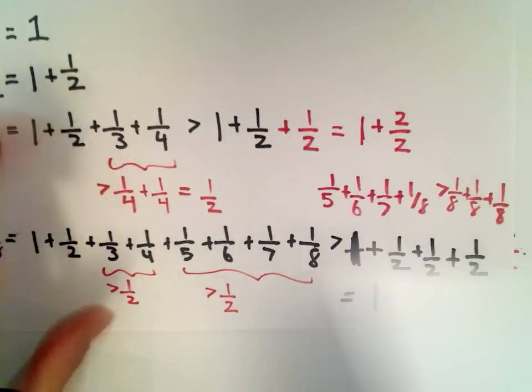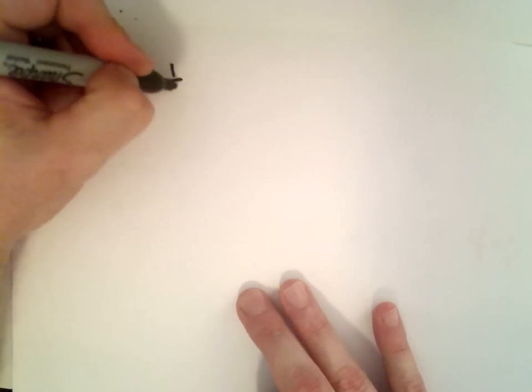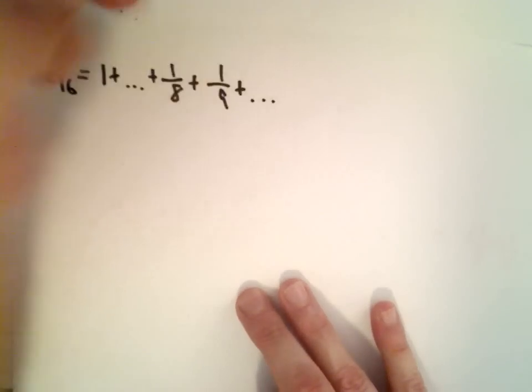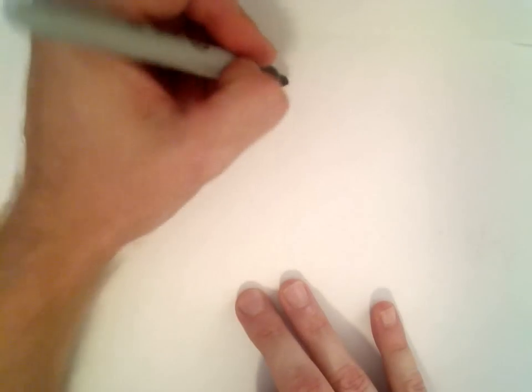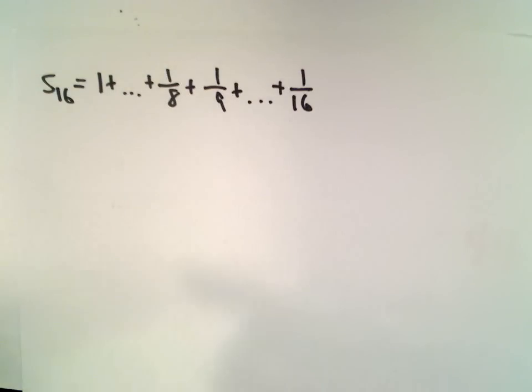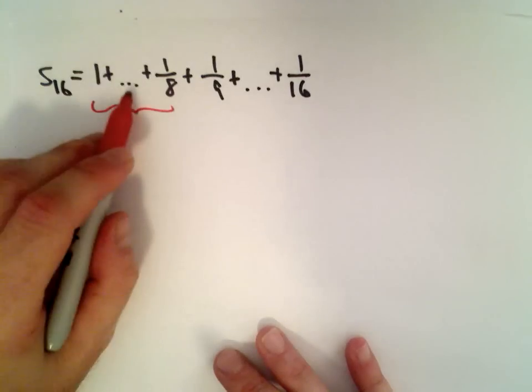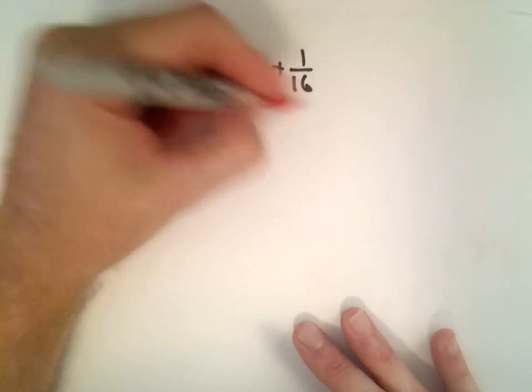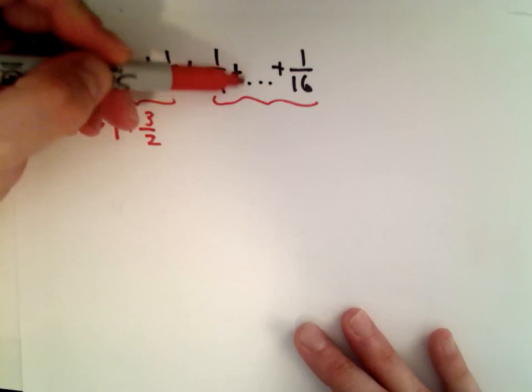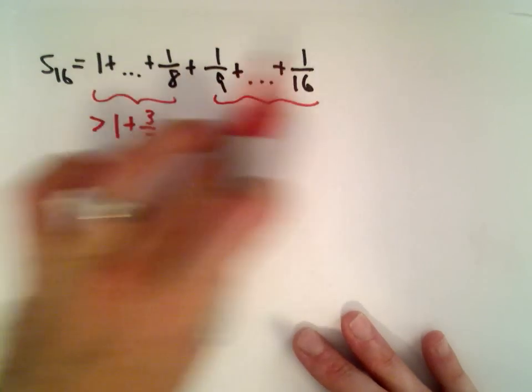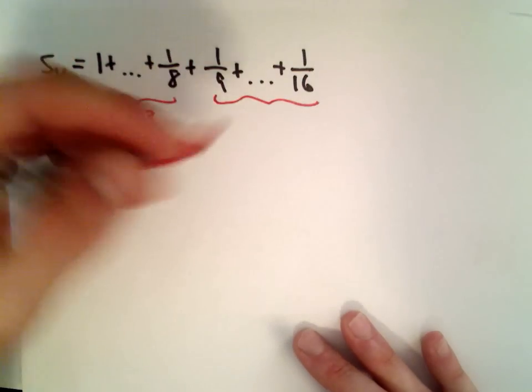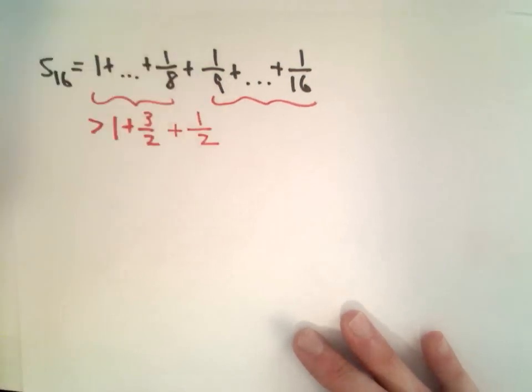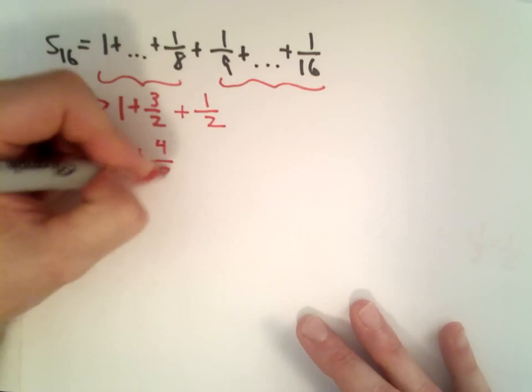Let's look at S sub 16, the first 16 terms. That's 1 plus 1 half plus 1 third plus 1 fourth plus 1 fifth, 6th, 7th, up to 1 eighth, and then plus 1 ninth plus 1 tenth, 11th, 12th, 13th, 14th, 15th, up to 1 over 16. We already said 1 plus up to 1 over 8 was larger than 1 plus 3 over 2. You can make the exact same argument now. 1 over 9 is larger than 1 over 16, so is 1 over 10, so is 1 over 11, and so on. If I add up these 8 terms, that's going to be larger than 1 half. So I can add on another 1 half, and that's going to give us 1 plus 4 over 2.